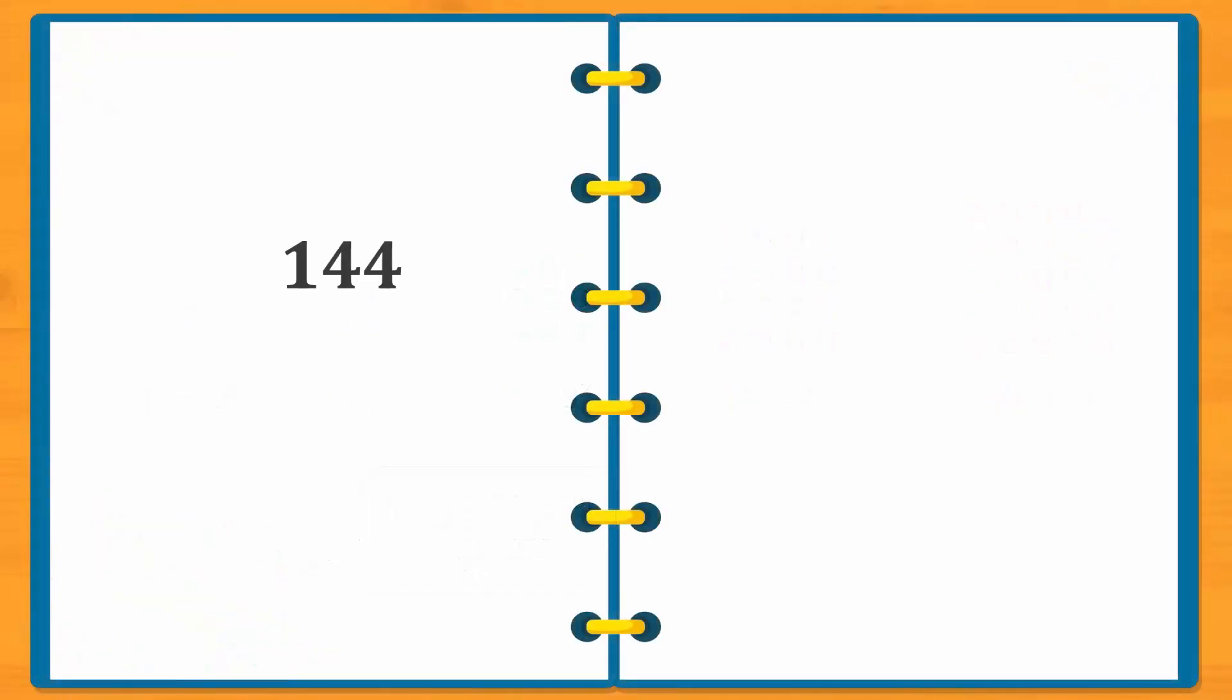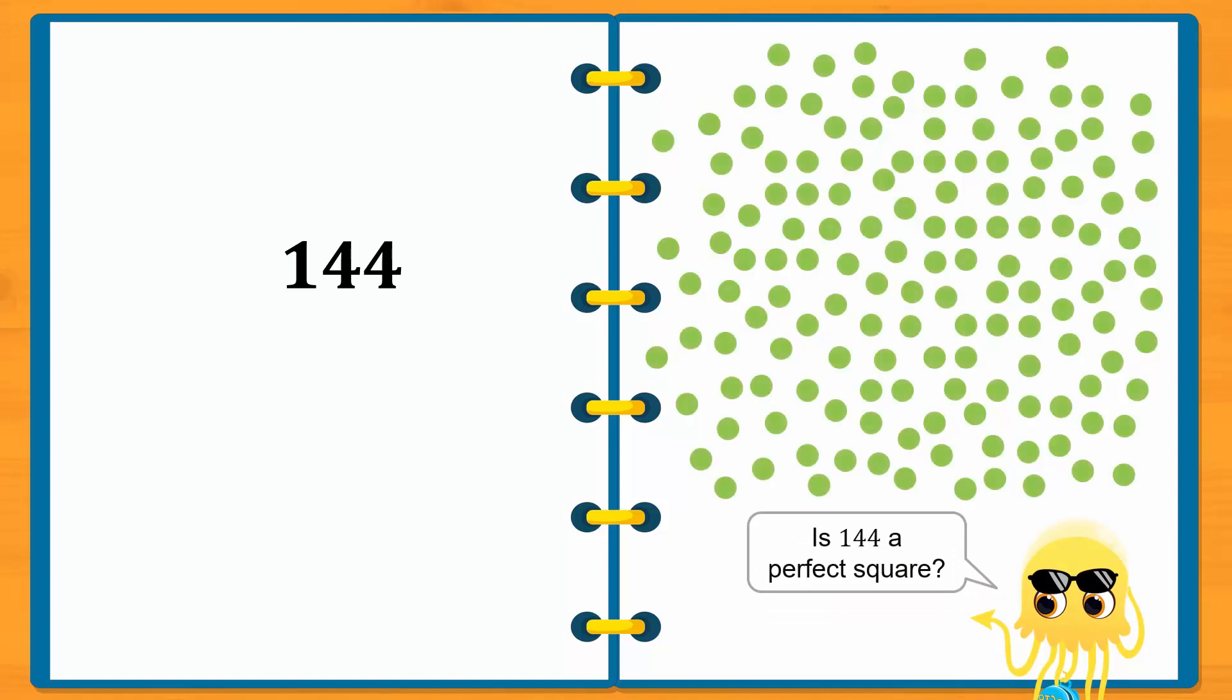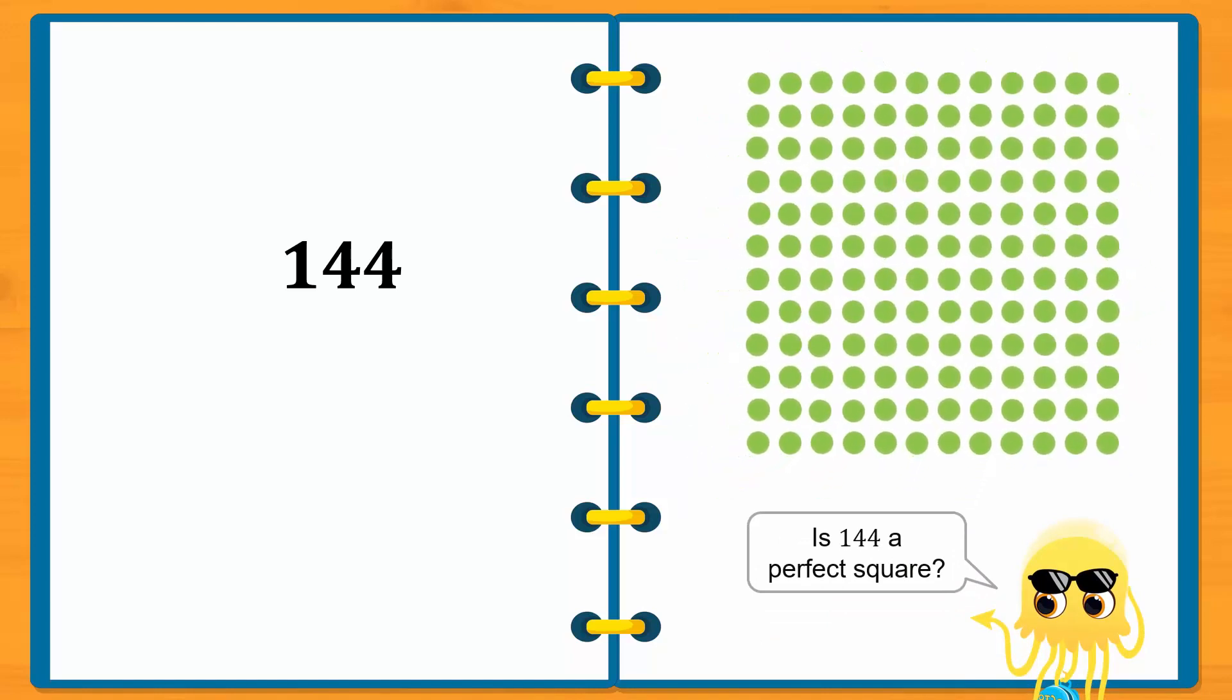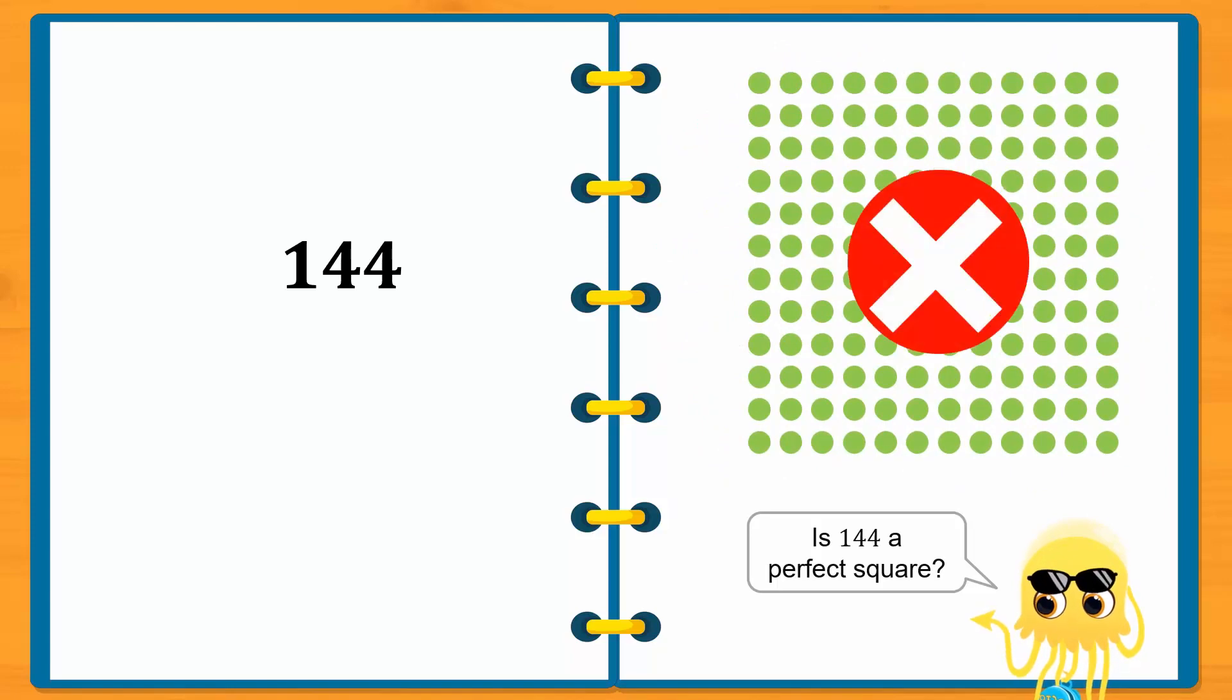Now, given a number such as 144, how do we check if it is a perfect square? We don't want to draw 144 dots and try to arrange them into a square shape.